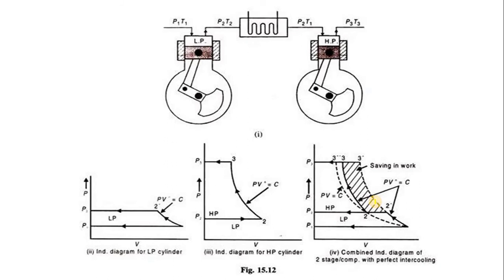Now discussing the PV diagram: before entering the low pressure stage, pressure and temperature are P1 and T1. After first compression in the lower stage, they change to P2 and T2. When the high-pressure air passes through the intercooler, the pressure remains constant — since the main function of the intercooler is to keep pressure constant and reduce temperature — and the temperature reduces back to approximately T1, similar to atmospheric temperature.